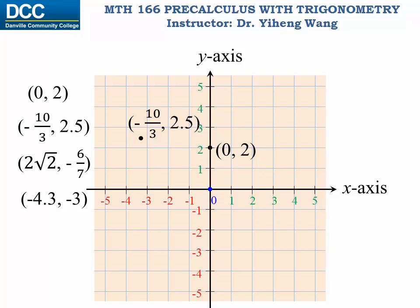For the third point, x-coordinate 2 square root of 2 tells you that the point is to the right of the y-axis, and the y-coordinate negative 6 over 7 tells you that the point is below the x-axis.